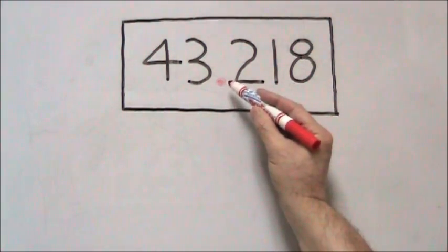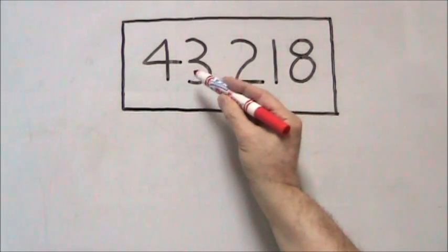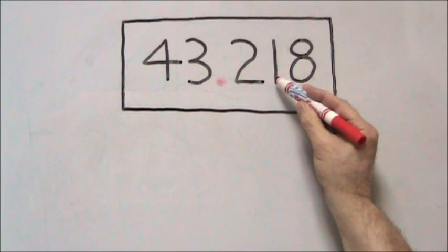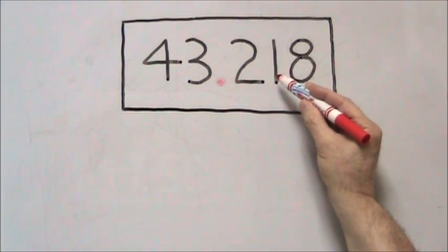The decimal point separates the whole numbers from the decimal numbers or the fractional numbers.